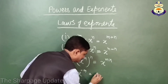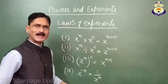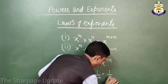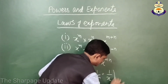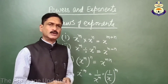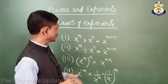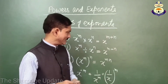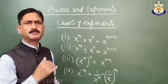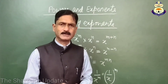Another law is that x raised to the power negative n is equal to 1 upon x raised to the power n, and it can also be written as 1 upon x^m. So my dear friends, these are some basic laws of exponents, and with these laws we can solve problems related to powers and exponents.